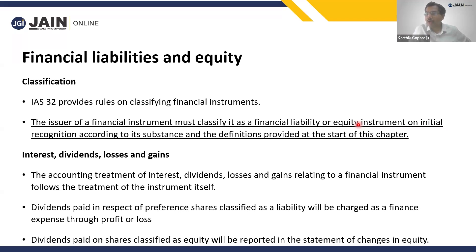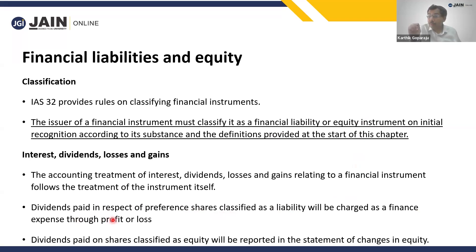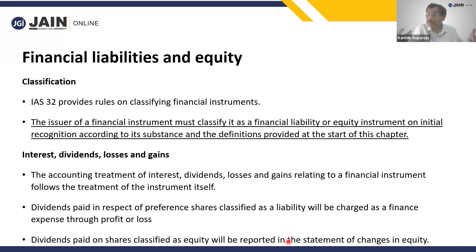Preference shares more often than not have the characteristics of a financial liability rather than equity. Therefore, dividends on preference shares are normally categorized as a finance expense and shown as a line item in the statement of profit or loss — not as an apportionment in the statement of changes in equity. Dividends on ordinary equity shares, however, go in the statement of changes in equity and have no place in the statement of profit or loss. All of this has a very important impact on the profit after tax number.